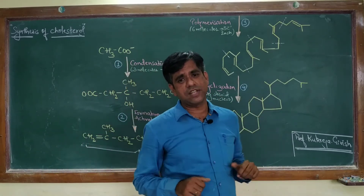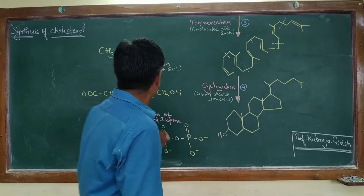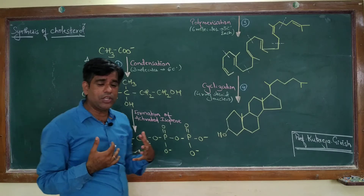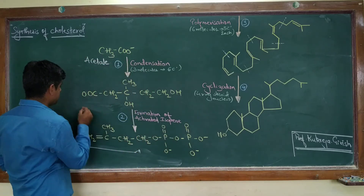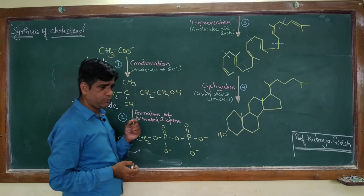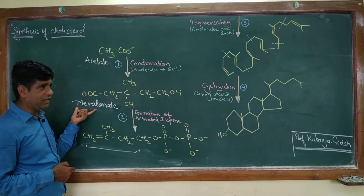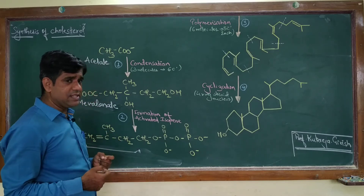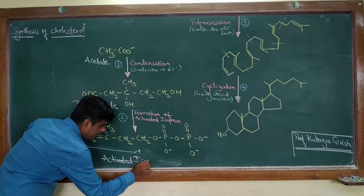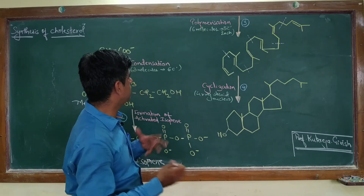The entire pathway for biosynthesis of cholesterol is complex, comprising many steps. Today we focus on the four basic steps. The first step is condensation: three molecules of acetate condense together to form a six-carbon intermediate called mevalonate, a prominent common intermediate in cholesterol biosynthesis. The second step is the formation of activated isoprene, which is an intermediate in the synthesis of many other biologically active molecules and electron carriers.